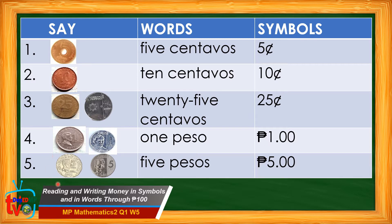For number five, we have also the old five-peso coin and the new five-peso coin. We say five pesos. If we write it in words, we write the words five then pesos. And if we write it in symbols, we write first the peso sign then the amount which is five followed by a decimal point and two zeros. The two zeros indicate that there are no centavos. We read this as five pesos.